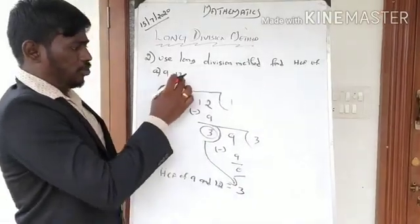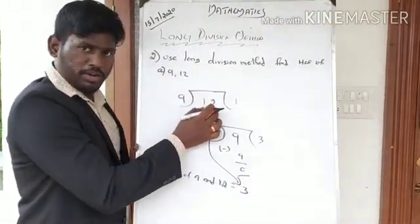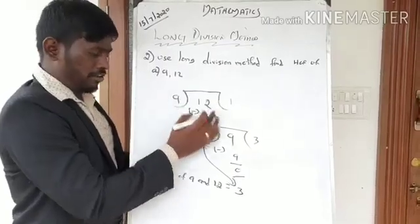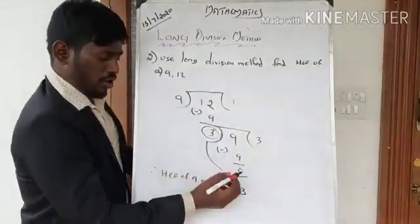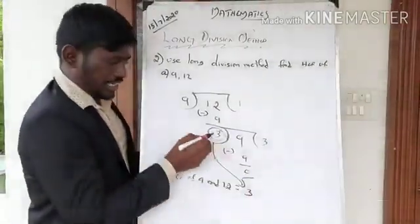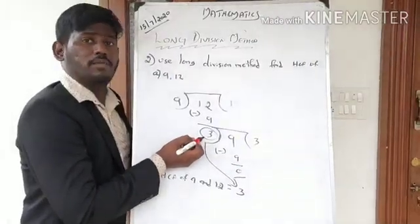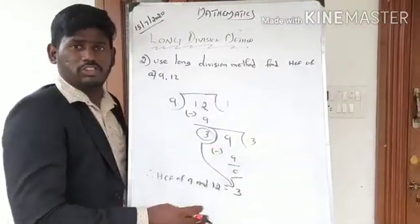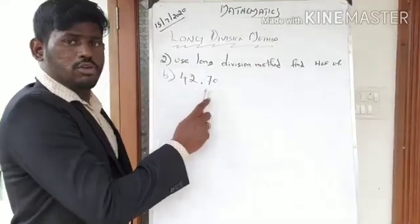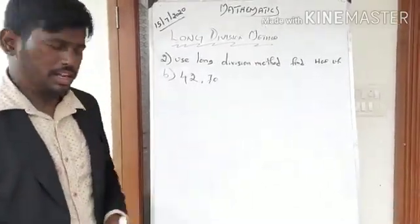To summarize: write the bigger number inside as the dividend and the smaller number as the divisor. Divide as usual. When you get the remainder zero, the divisor at that point will be your HCF.